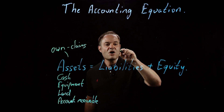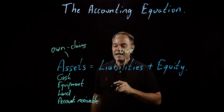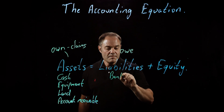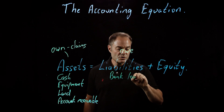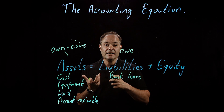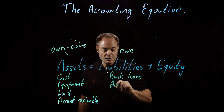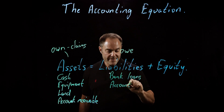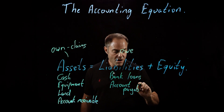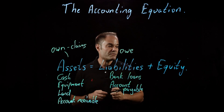Liabilities, on the other hand, are amounts that the company owes. Think of that as bank loans, mortgages, different types of loans. But also, if the company purchases something and has not yet paid for it, that would be an account payable. Those are amounts that the company owes to banks or to any form of creditor.